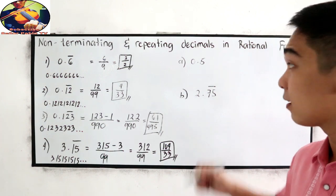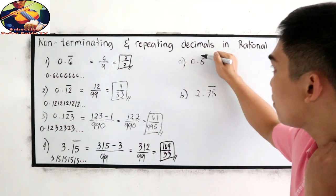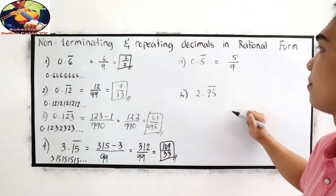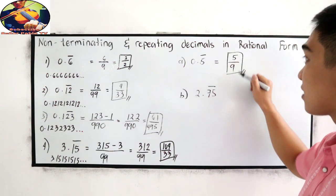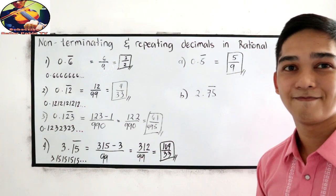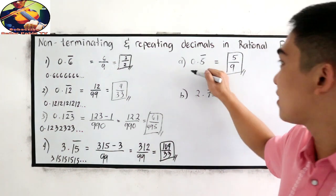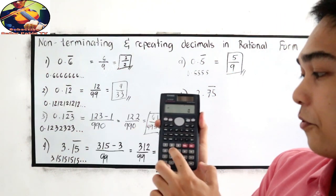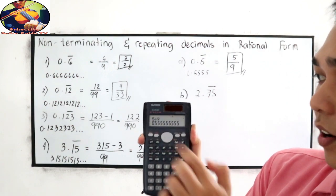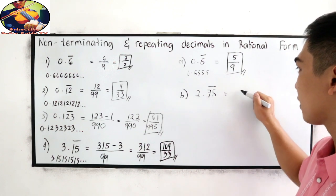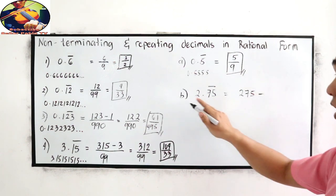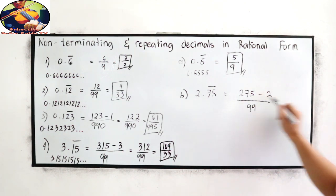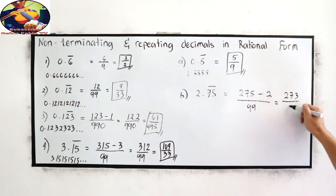Let's check. For 0.5 bar: that is simply 5 over 9. It is already in simplest form. We know this equals 0.5555. Check: 5 divided by 9 equals 0.5555. For number 2, 2.75 bar: 275 minus 2 over 99, which gives 273 over 99.